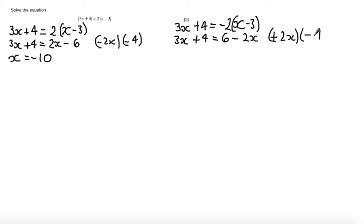And subtract 4, so that I get 5x is equal to 2, and then if I divide by 5, I get x is equal to 2 fifths.